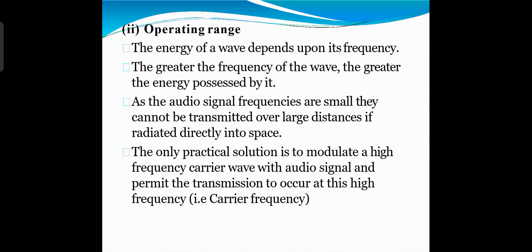Regarding operating range: an audio signal usually has a frequency range of 20 Hz to 20 kHz. If it is directly transmitted, the ratio of highest to lowest frequency becomes 20 Hz to 20 kHz, which equals 1000. But if this audio signal is modulated over a carrier signal of frequency 1000 kHz, the ratio of highest to lowest frequency becomes nearly equal to 1.2. Hence, we need modulation to convert a wide band signal into a narrow band signal.